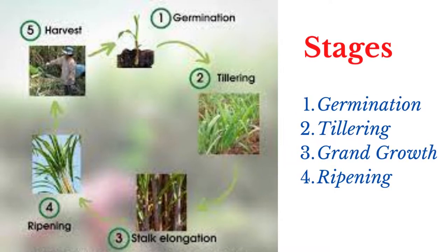Sugarcane goes through four important phases as it grows: the germination phase, the tillering phase, the grand growth phase, and the ripening and maturing phase.